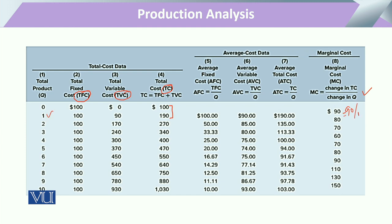For another point, moving from unit 5 to unit 6, there is again a change in output of one unit. Here total cost changes from 470 to 580, which is a change of 110 in total cost per one unit change in output. So marginal cost is calculated as the change in total cost due to a change in one unit of output.